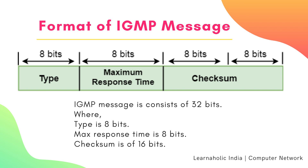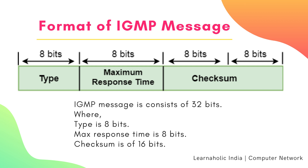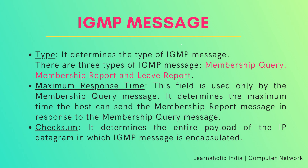Now we will see the format of IGMP Message in detail. The IGMP Message consists of 8 bytes, that is 32 bits. The Type field is 8 bits, Maximum Response Time is 8 bits, and Checksum is 16 bits. The Type field determines the type of IGMP Message. There are three types of IGMP Messages: Membership Query, Membership Report, and Leave Report.